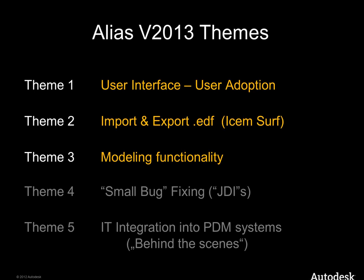Topic number three, modeling functionality — that's the normal regular improvements you would expect from a new version. Topic number four was a special program from Autodesk. JDI stands for Just Do It. If you're a long-term Alias user, you know these little small bugs that are not super important and never make it to the top of the priority list to be fixed. We made an additional initiative, JDI, to fix these bugs in addition to the normal bug fixing.